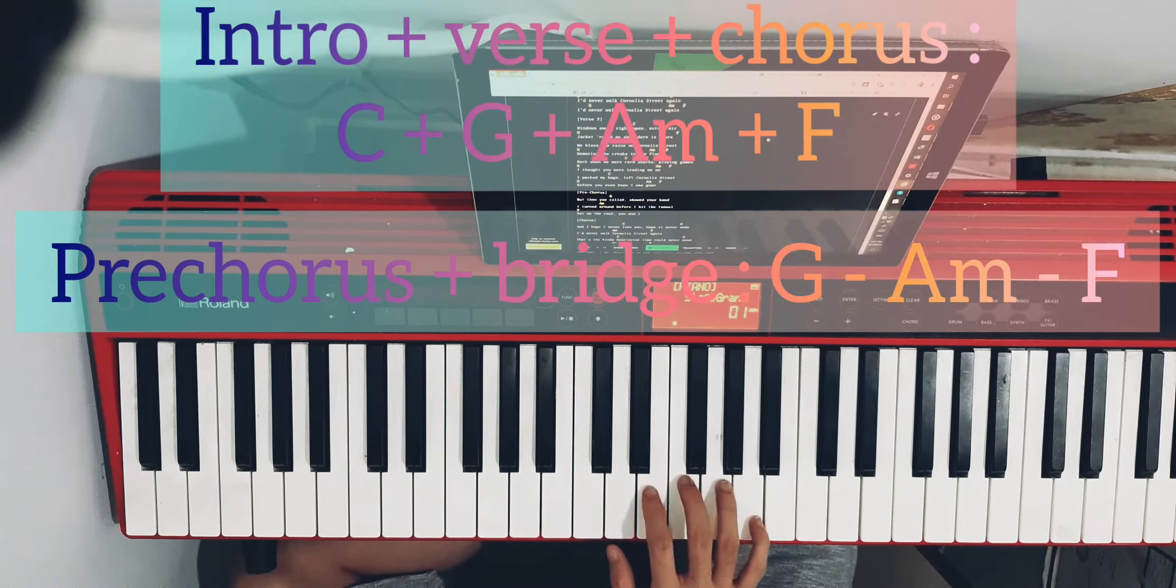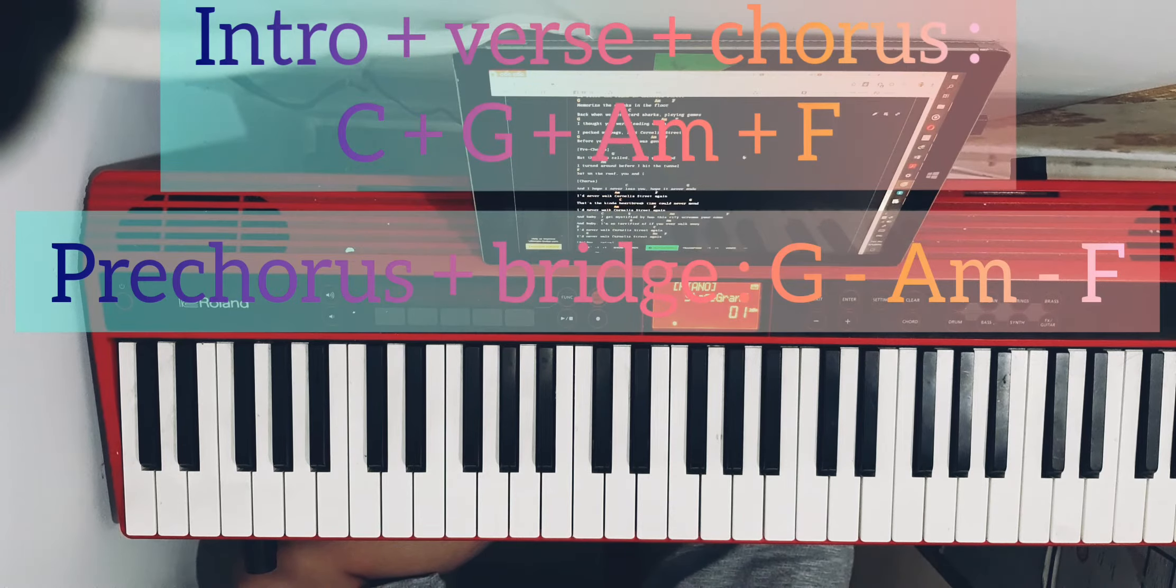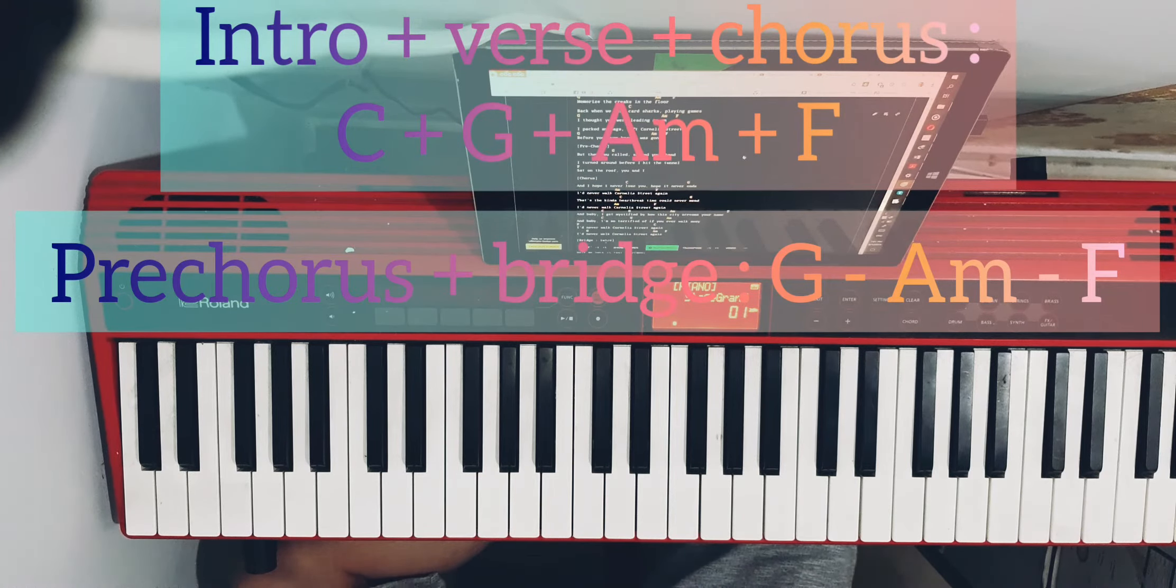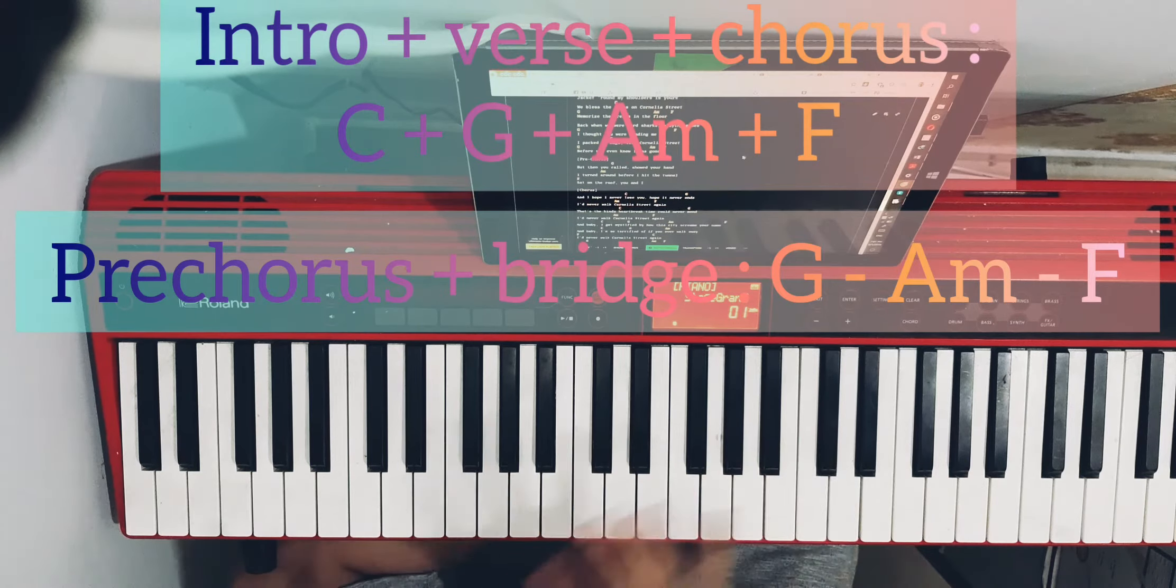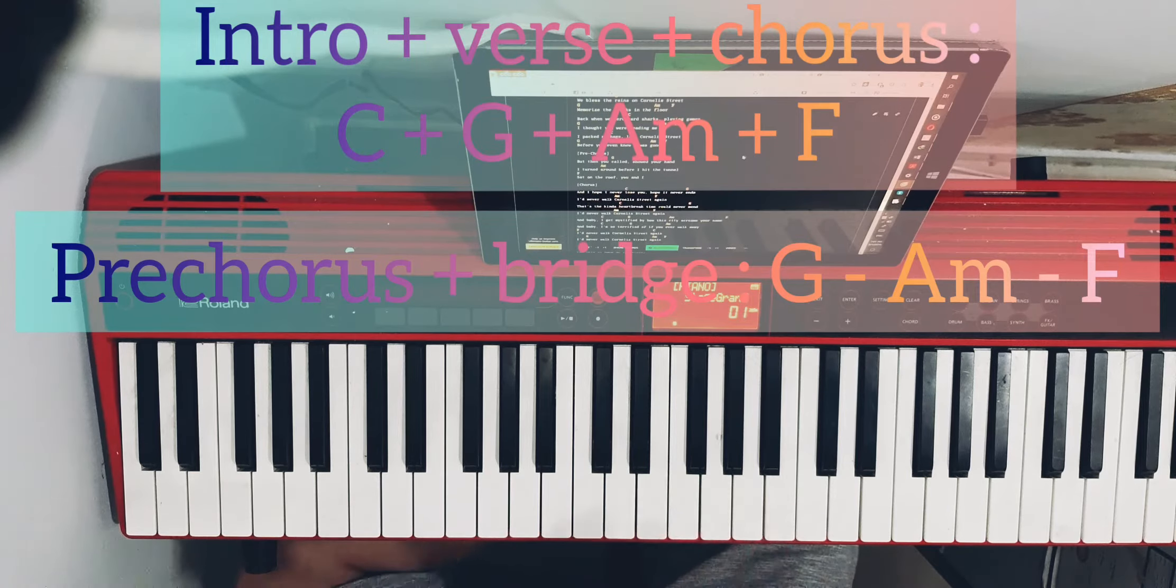The second verse is the same, but it has the pre-chorus. The pre-chorus is the progression but without the C. So it's only G, A minor, and F.